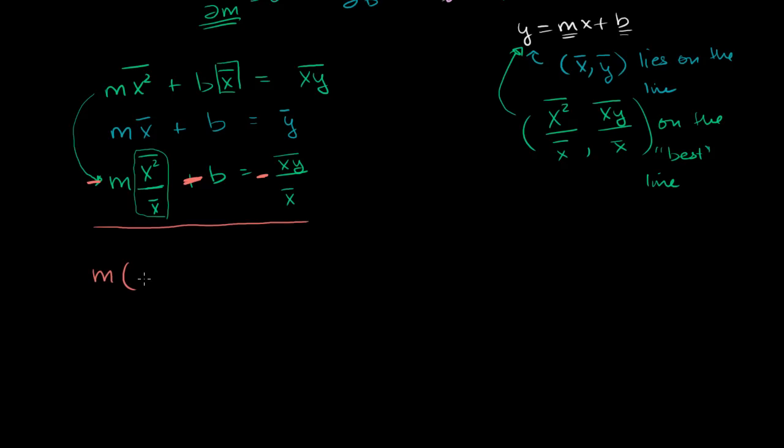We get m times the mean of the x's minus the mean of the x squareds over the mean of x's. The plus b and the negative b cancel out, is equal to the mean of the y's minus the mean of the xy's over the mean of the x's. And then we can divide both sides of the equation by this. And so we get m is equal to the mean of the y's minus the mean of the xy's over the mean of the x's, over this: the mean of the x's minus the mean of the x squareds over the mean of the x's.